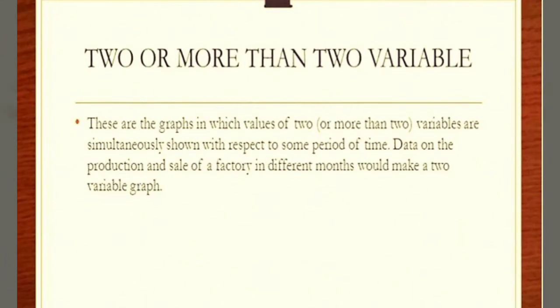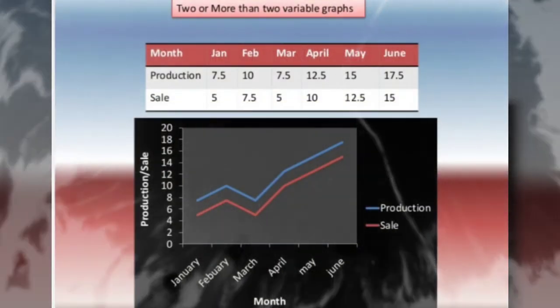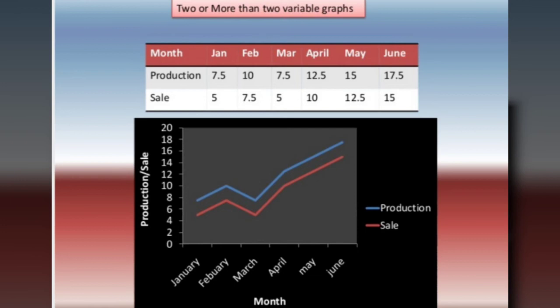Now two or more than two variable graphs. These are graphs in which values of two or more than two variables are simultaneously shown with respect to some period of time. For example, data on the production and sale of a factory in different months would make a two variable graph.